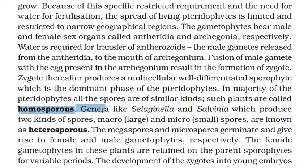When all spores are of similar kinds, they are called homosporous. However, genera like Selaginella and Salvinia produce two types of spores — large spores called megaspores and small spores called microspores — and such plants are called heterosporous.